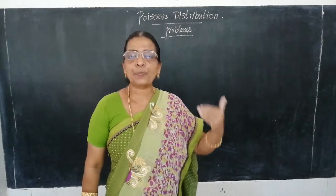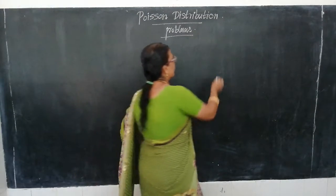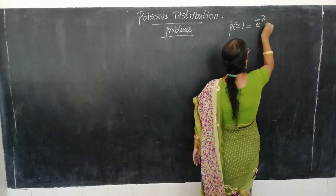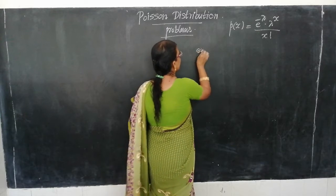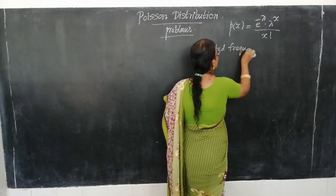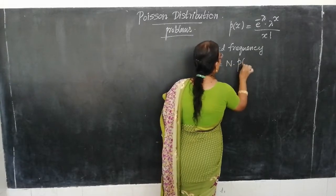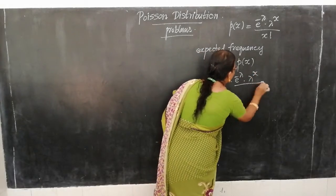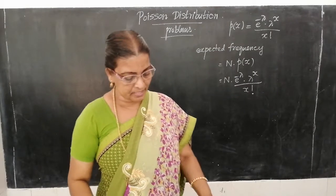We know the probability density function and the expected frequency formula. For a Poisson distribution, P(x) = e^(−λ) · λ^x / x!. The expected frequency is equal to N · P(x), that is N · e^(−λ) · λ^x / x!. We will use this to solve the problem.